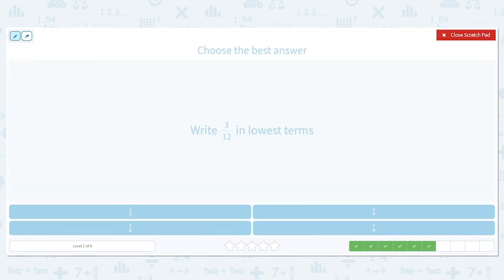Next one. Write 3 twelfths in lowest terms. Okay. Well, I can't divide by 1, because I would just keep getting 3 twelfths over and over. So that means my only other option is 3, because the only two factors for 3 are 1 and 3. So 3 divided by 3 is 1, and 12 divided by 3 equals 4. So 3 twelfths in lowest terms is 1 fourth.